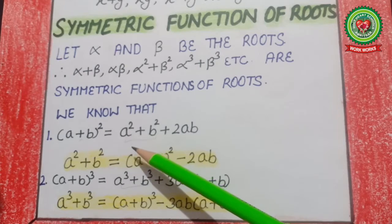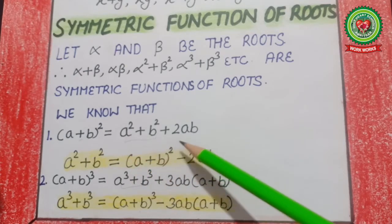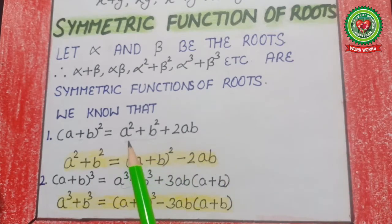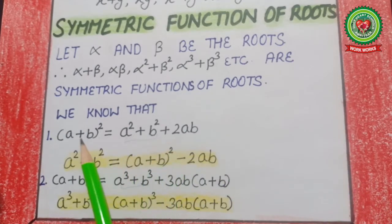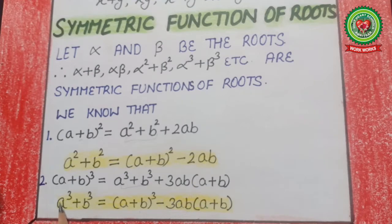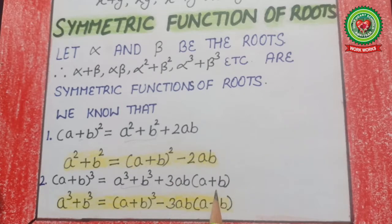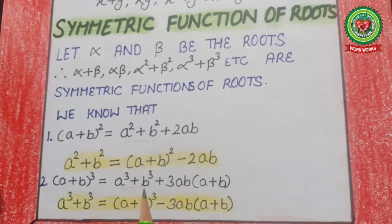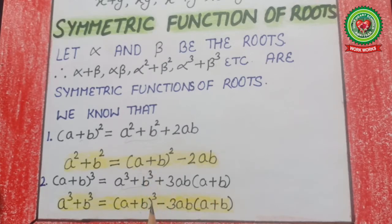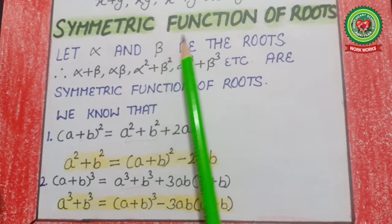In symmetric functions of roots we have done two formulas. The first is: (a+b)² = a²+b²+2ab, from which a²+b² = (a+b)² − 2ab. The second formula is (a+b)³ = a³+b³+3ab(a+b), from which a³+b³ = (a+b)³ − 3ab(a+b). These are the two formulas in terms of variables a and b, according to symmetric functions of roots.